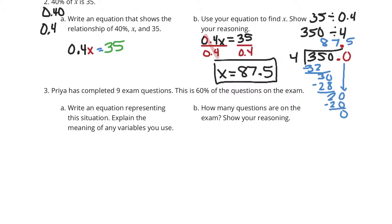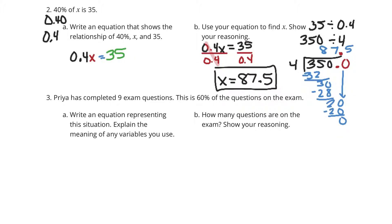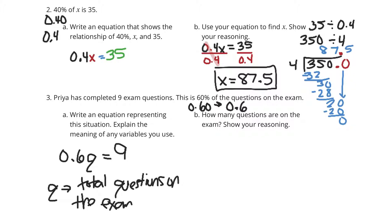Question three. Priya has completed nine exam questions. This is 60% of the number of questions on the exam. Write an equation to represent the situation. Explain the meaning of any variables you use. Well, 60% is equal to 0.60, which is the same thing as 0.6, so 60 hundredths and six-tenths. We can take six-tenths times the total number of questions is going to be nine. In other words, six-tenths Q are the total questions on the exam. If I take 60% times the total questions, I get the nine exam questions that she's finished.